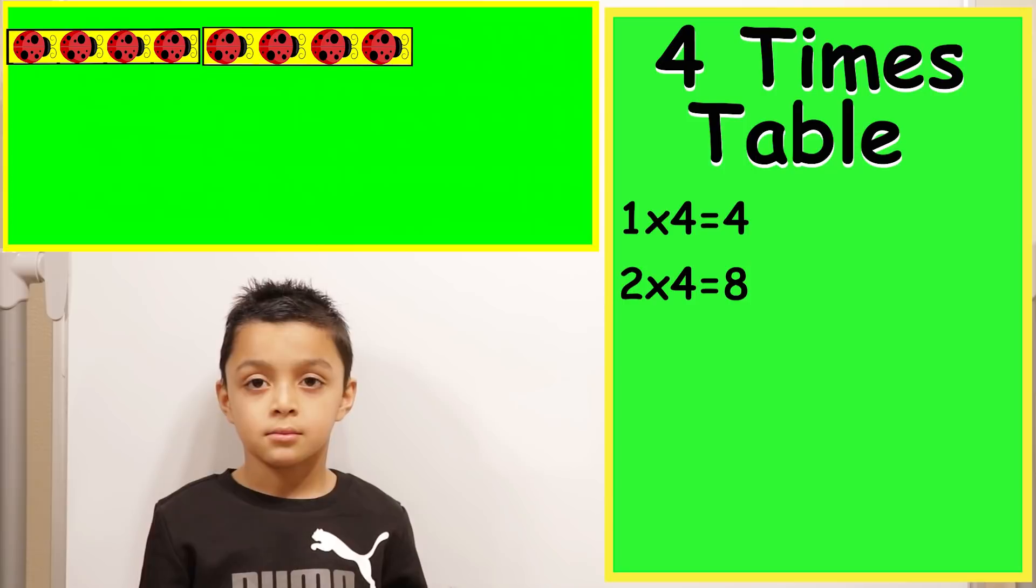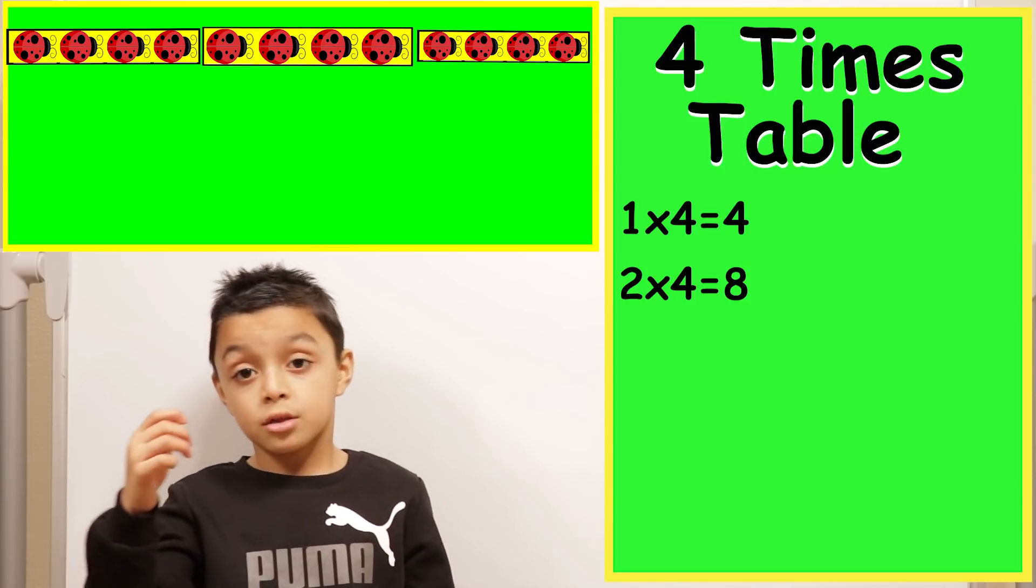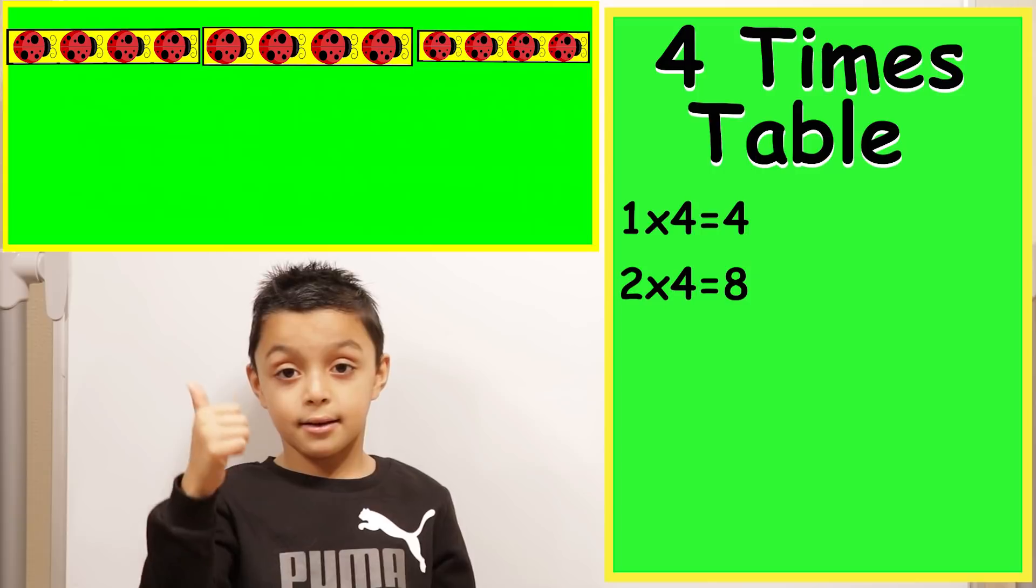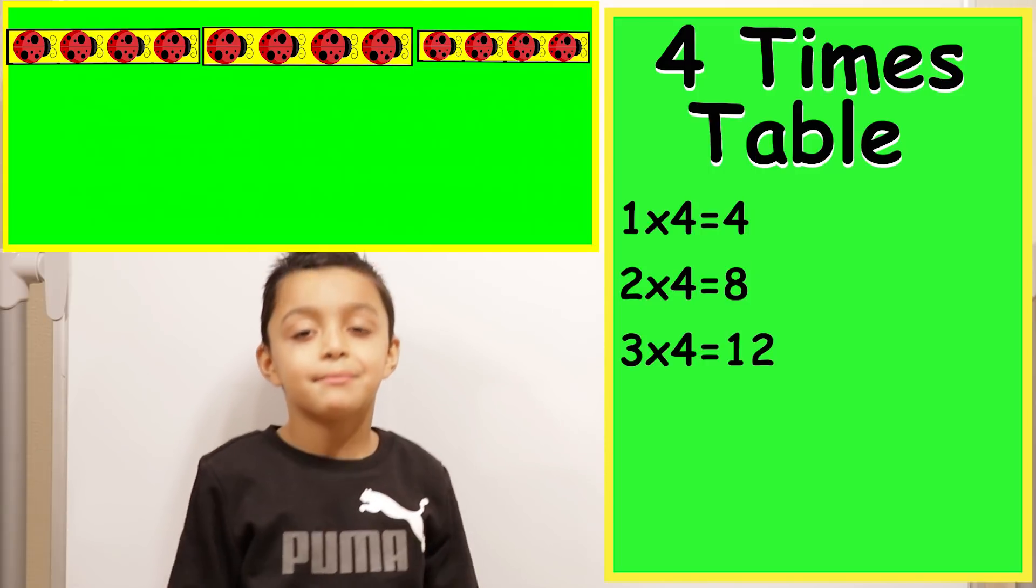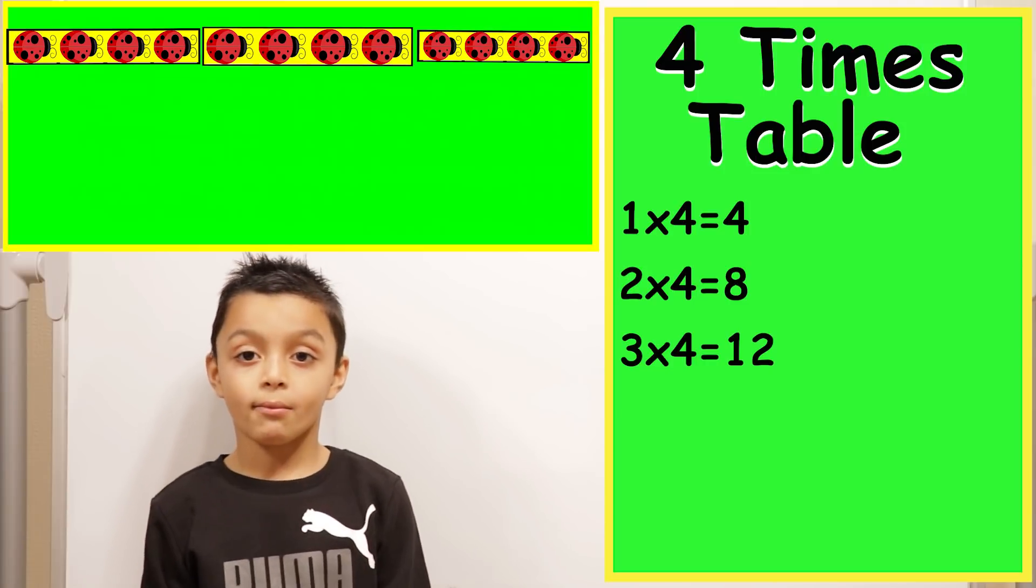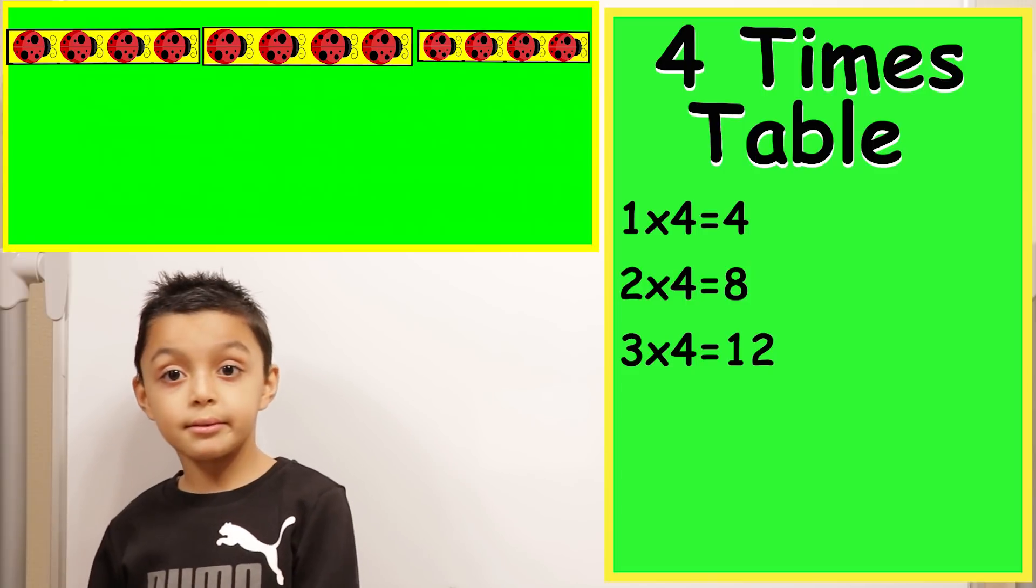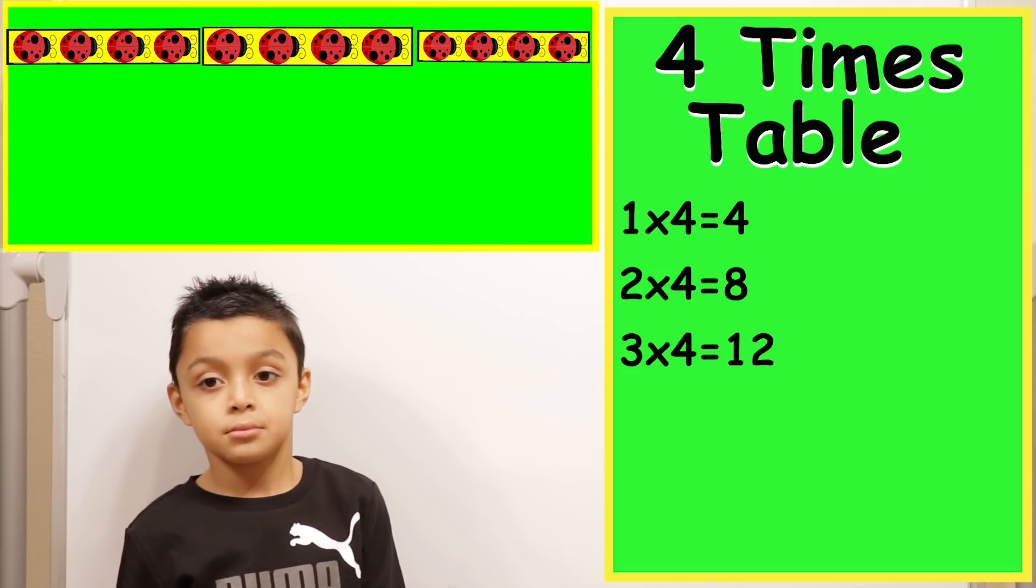So what is the answer for two times four? Well, four, five, six, seven, eight. Very good. Two times four equals eight. Next question is three times four. Four. So eight, nine, ten, eleven, twelve. So three times four equals twelve. So you're now only counting on four from the previous answer. Yeah. So three times four equals twelve.